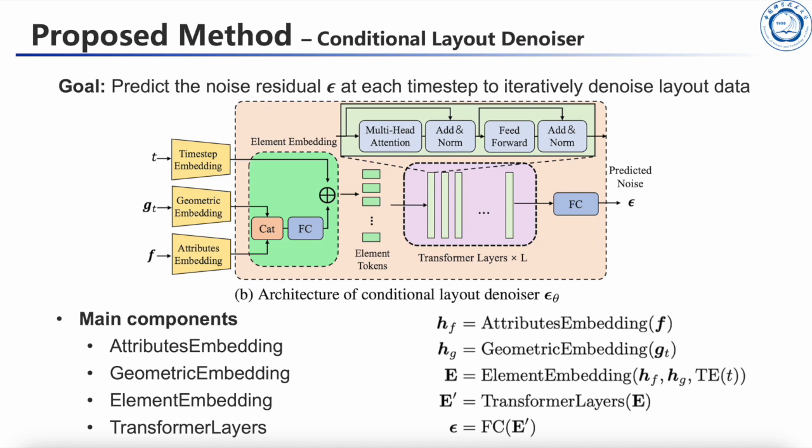The model comprises four main components: attribute embedding, geometric embedding, element embedding, and transformer layers.